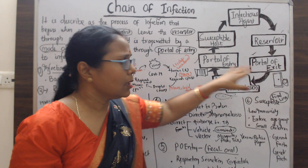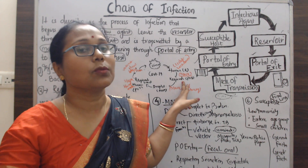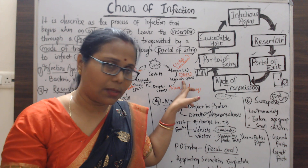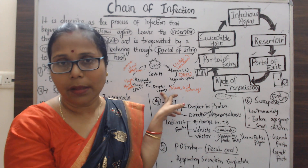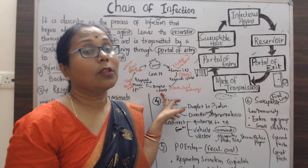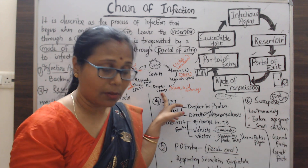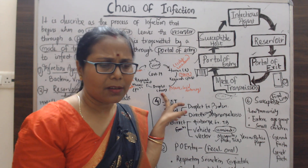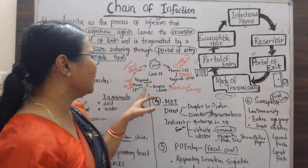The portal of exit for COVID-19 is nasal secretion. To break this chain, governments made wearing masks compulsory in all places. The mode of transmission is droplet — aerosol particles move through the air and transfer from one person to another. Governments declared compulsory mask-wearing and social distancing of six feet, because droplet particles are tiny and can only travel approximately five feet.